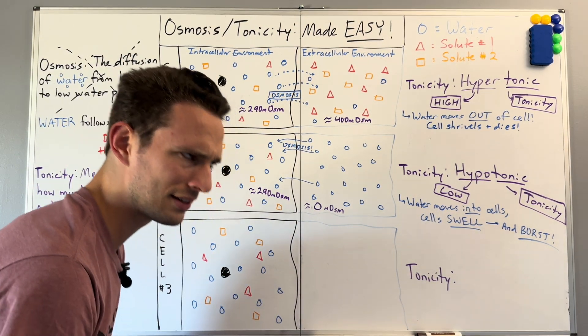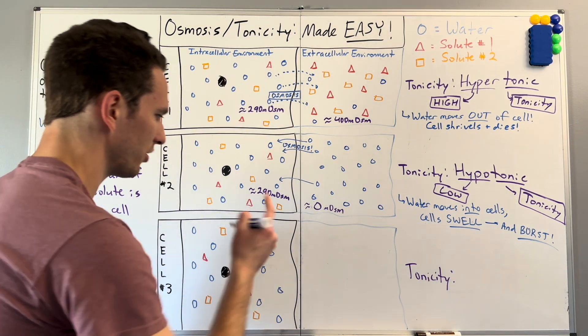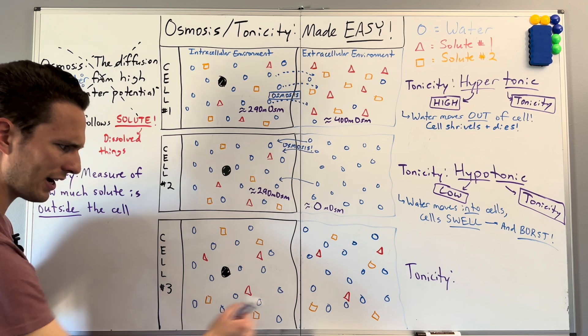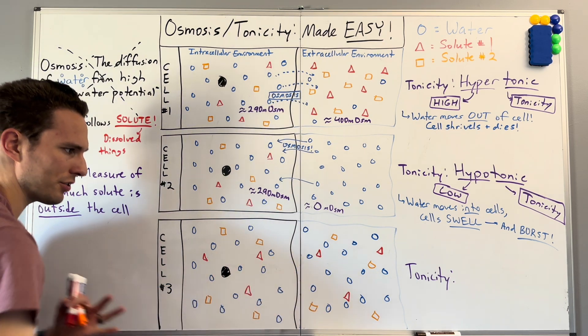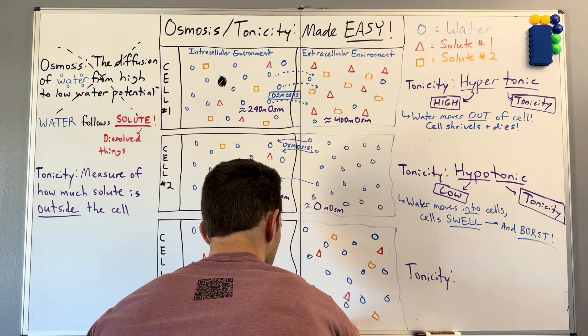Now, lastly, but not leastly, if that made sense, let's say we have a cell with an environment that looks like this. And as we look back and forth, we can see there's an equal amount of both water and solute. So this would actually be the same osmolarity as inside of the cell.